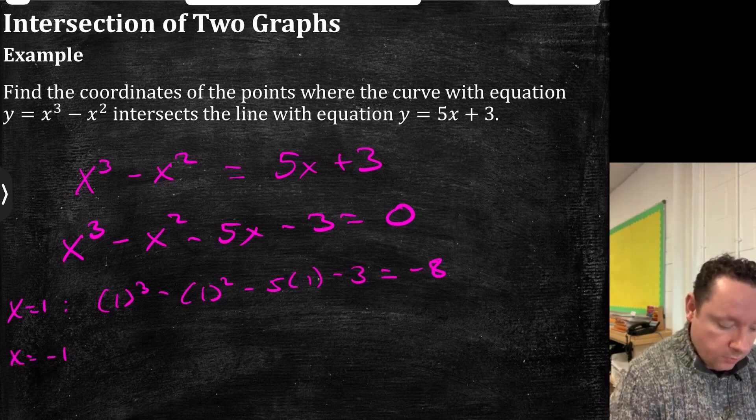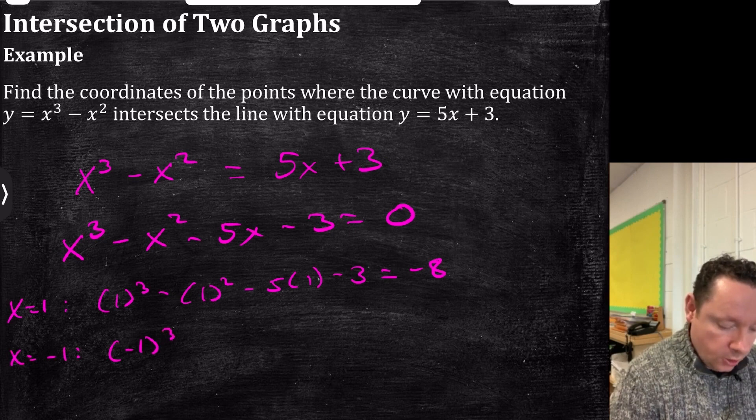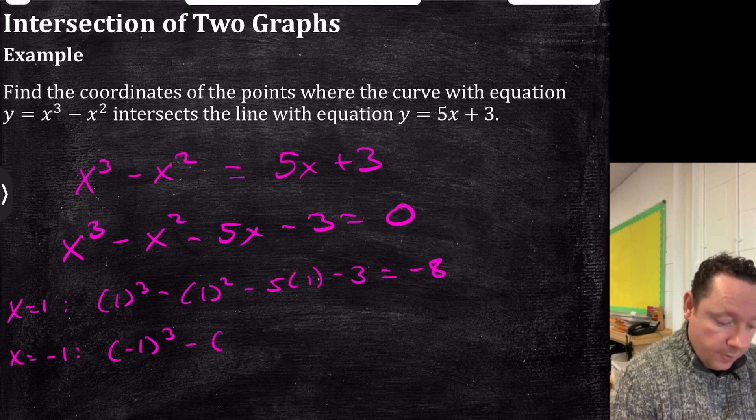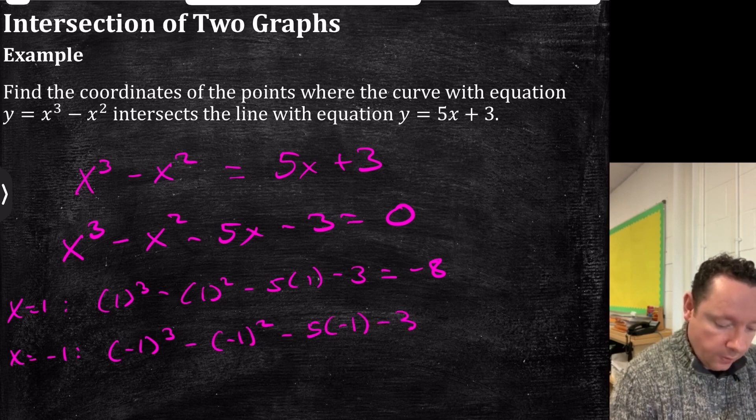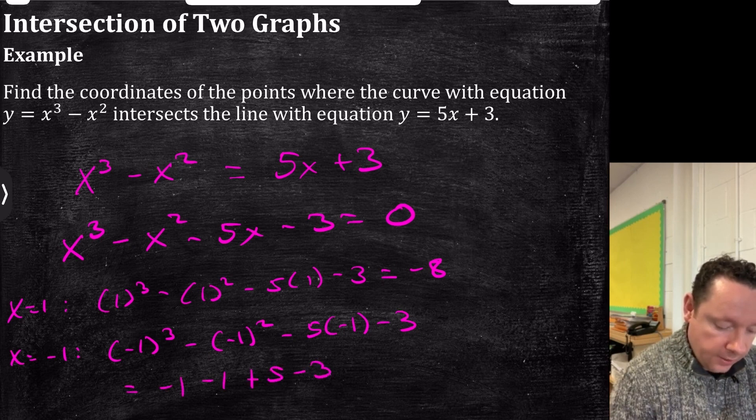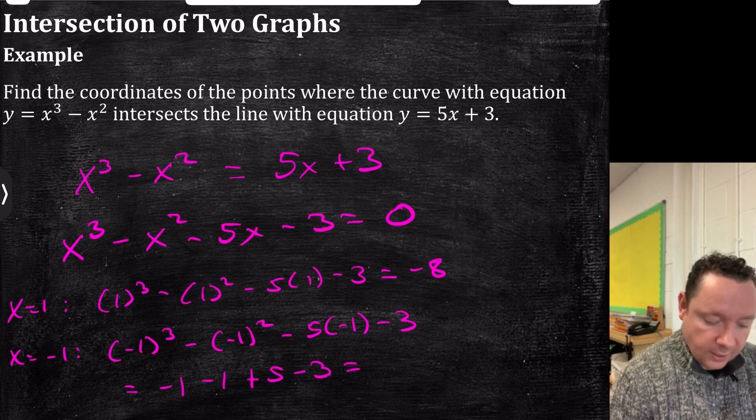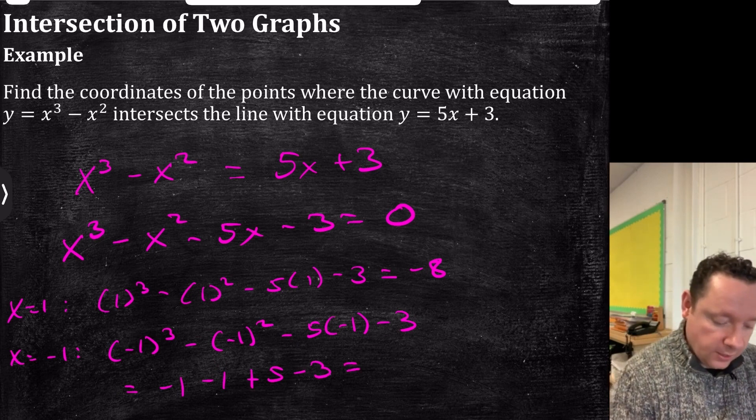If you try minus 1 though, you get minus 1 cubed, take away minus 1 squared, take away 5 times minus 1, take away 3. So that's minus 1 minus 1, that's minus 1 minus 1 again, plus 5 minus 3. Well, minus 1 minus 1 is minus 2, minus 3 is minus 5, so that's 0.